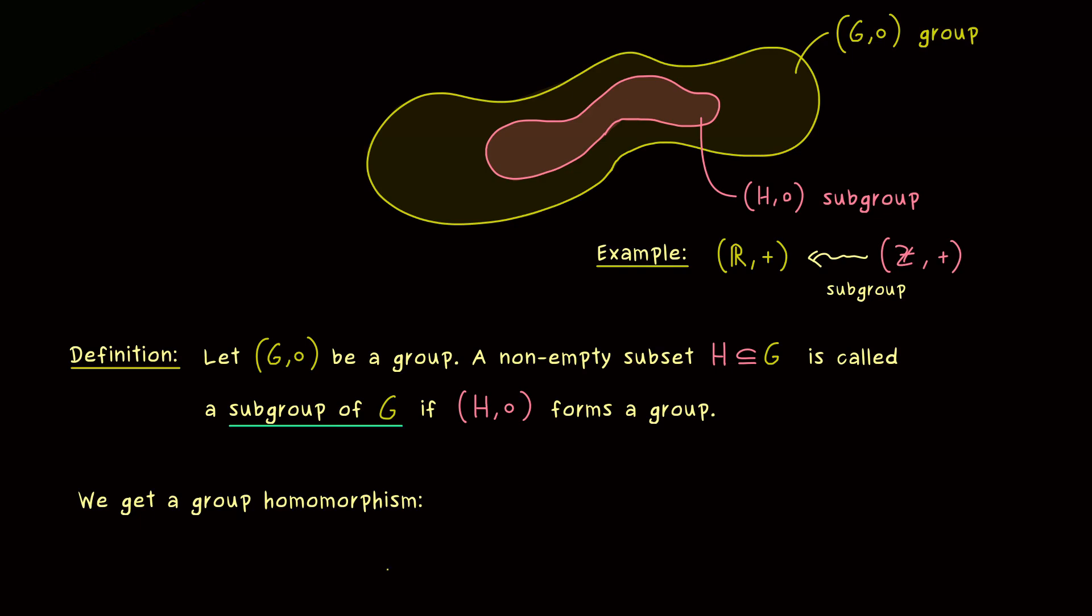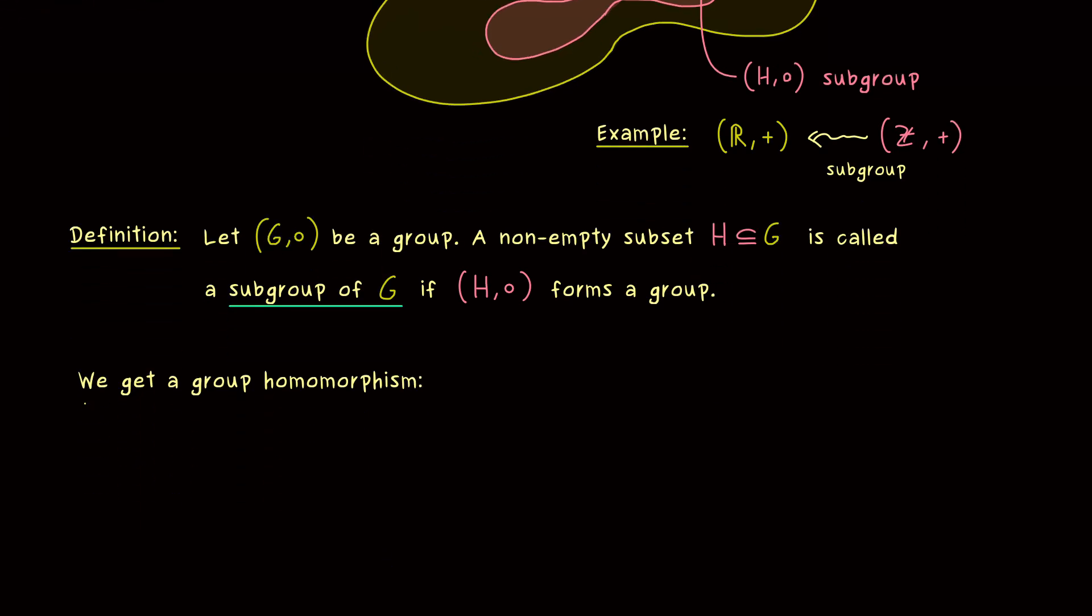And now we can immediately make the connection to the last video. Namely we can show that we have a group homomorphism here. This means we have a map φ from H into G. And of course we have it in this direction because H is usually smaller than G. And moreover the definition is really simple because we just have to send x to x again. In other words we can just choose the identity map here. And then obviously we have the defining property of a group homomorphism because the binary operation left and right here are the same. So nothing really happens here. We just have a with b on the left hand side and a with b on the right hand side. But still we can use the general properties a group homomorphism gives us.